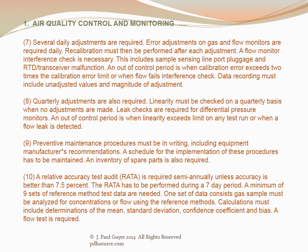Preventive maintenance procedures must be in writing, including equipment manufacturer's recommendations, with a schedule for implementation maintained and an inventory of spare parts required. A relative accuracy test audit is required semi-annually unless accuracy is better than 7.5 percent. The RATA has to be performed during a seven-day period, with a minimum of nine sets of reference method test data. One set of data consists of a gas sample analyzed for concentrations or flow using the reference method. Calculations must include determinations of the mean, standard deviation, confidence coefficient, and bias.